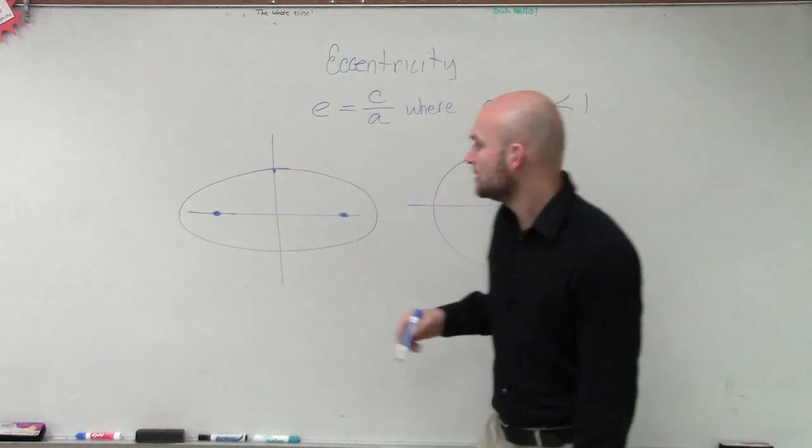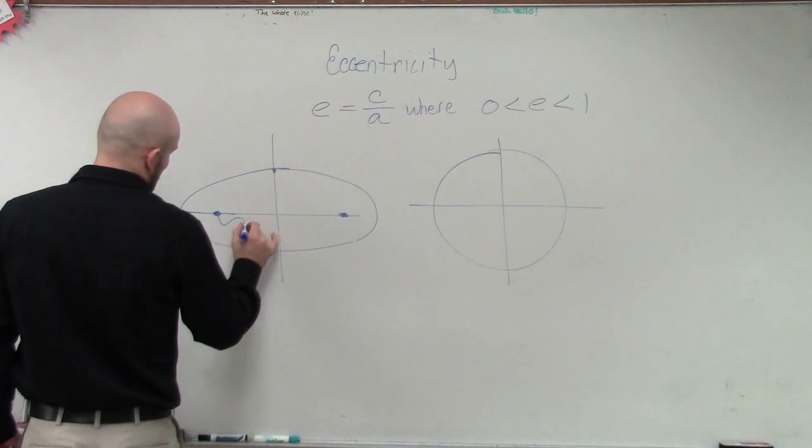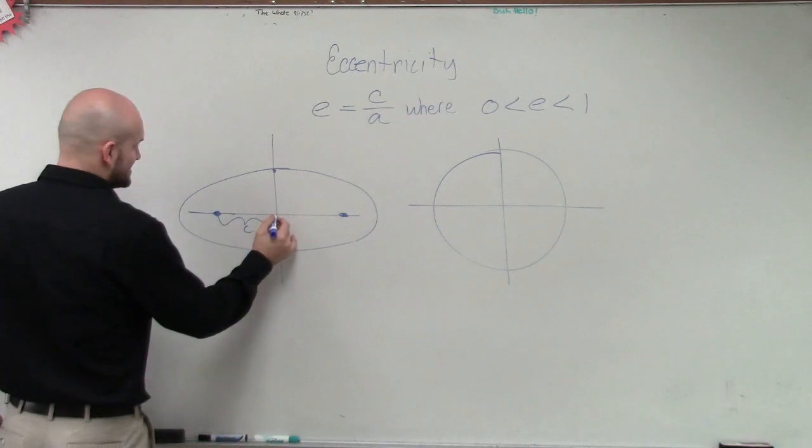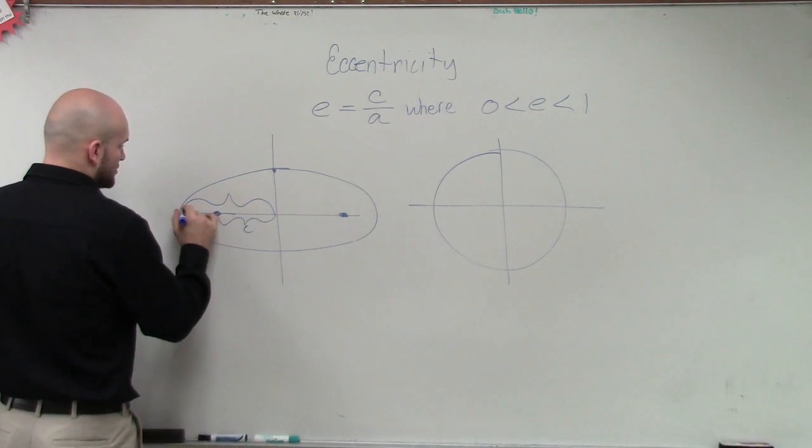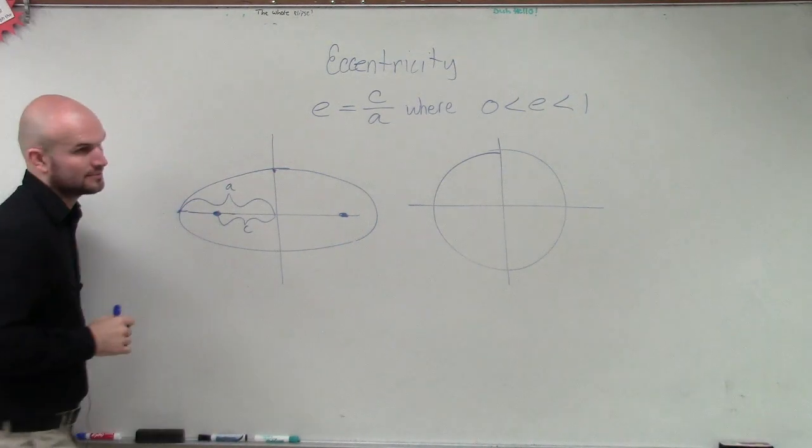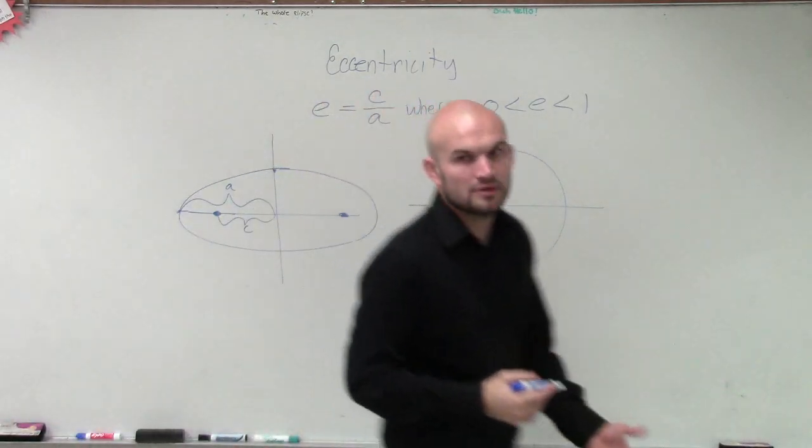So what we have is we have this distance. Now, remember this distance was c and this distance to the vertices is a.